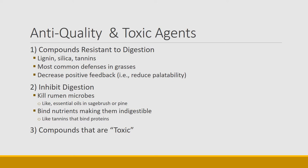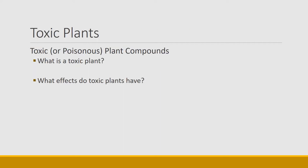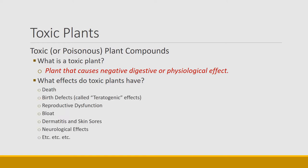And then finally there are compounds that we would call toxic. My basic definition is plants that cause negative digestive or physiological effects. Mostly we think about toxic or poisonous plants as having really major identifiable physiological effects. Those can vary significantly — it could be death, that would be the most obvious.